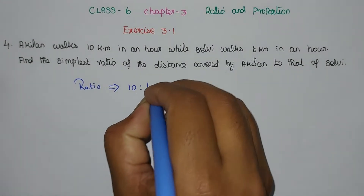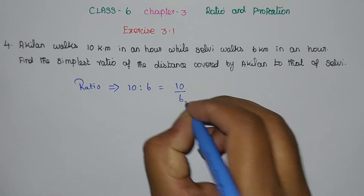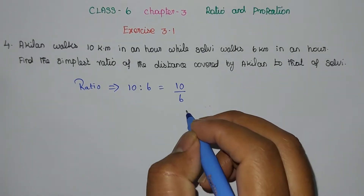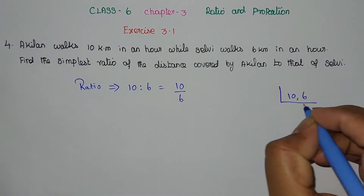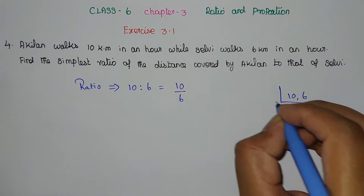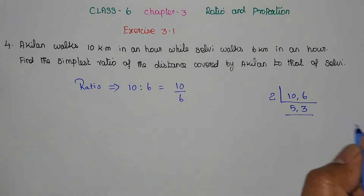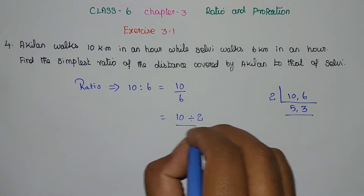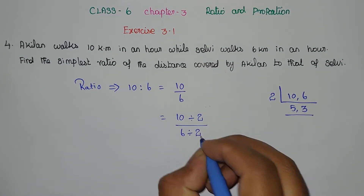The simplest ratio is the fraction 10 by 6. The next step is to divide by a common number. The common factor is 2, so we divide: 10 divided by 2 gives 5, and 6 divided by 2 gives 3. So the simplified fraction ratio is 5 by 3.